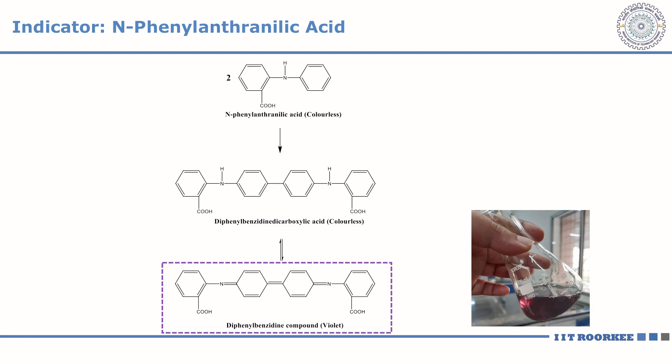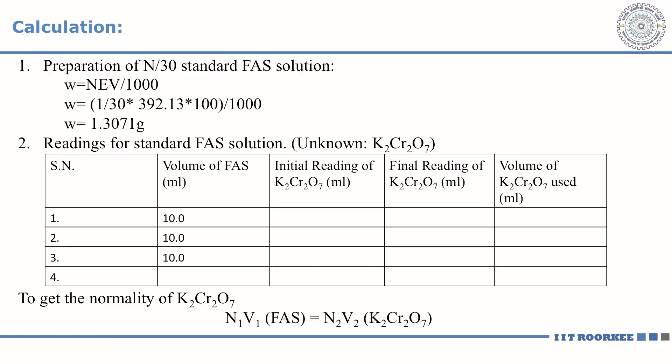We have achieved the end point of this titration. At the start of this experiment we noted down the initial reading. Now at the end point, the final reading is 19.7 and the initial reading in the burette was 10. We have to repeat this experiment until we get concordant readings, and then with the formula N1V1 = N2V2, we calculate the normality of the aqueous potassium dichromate solution.